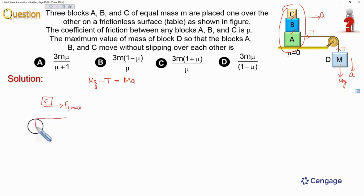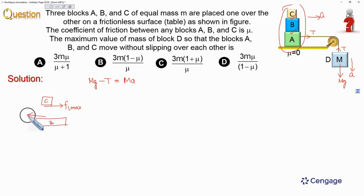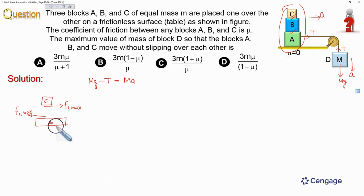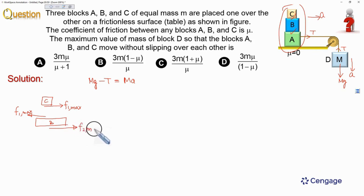Now consider the free body diagram of block B. Friction on the top surface acts in the leftward direction — since friction at the same contact surface always occurs in pairs, this is F1 max in the leftward direction. Block B is also moving rightward, so friction from the lower surface acts in the rightward direction, equal to F2 max.